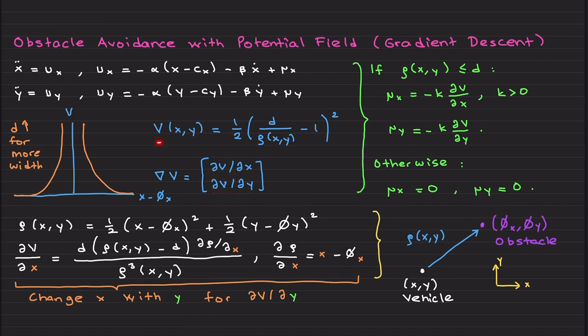Before explaining that, I would like to generate these additional control signals forces like μx to be minus k multiplied by dV over dx, and μy is minus k dV over dy. I also need to choose this function ρ.